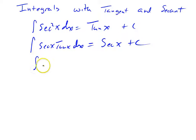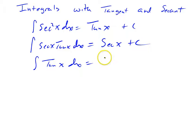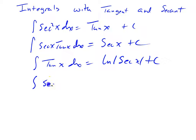There is also the integral of tangent x, which we did with a u-substitution. We wrote this as sine x over cosine x and saw that this ended up being the natural log of the absolute value of the secant of x. And lastly, we did the integral of secant x with a really tricky u-substitution and ended up with the natural log of the absolute value of secant x plus tangent x.